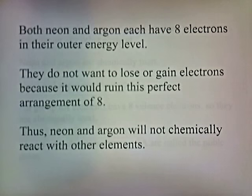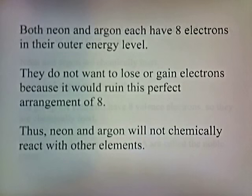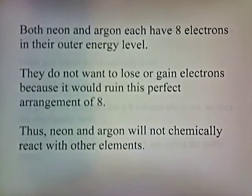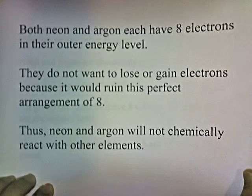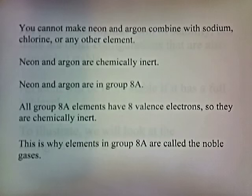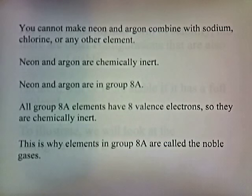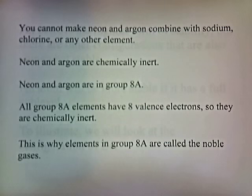Both neon and argon each have eight electrons in their outer energy level, and they don't want to lose or gain electrons because it would ruin this perfect arrangement of eight. Thus, neon and argon will not chemically react with other elements. You cannot make neon and argon combine with sodium, chlorine, or any other element. Neon and argon are chemically inert, and they are in group eight. All group eight elements have eight valence electrons, so they are chemically inert.